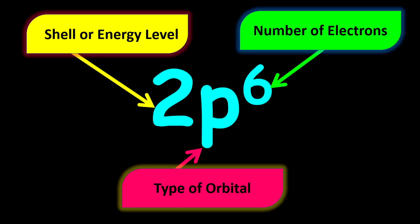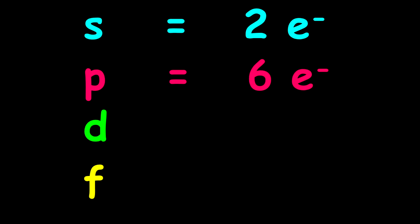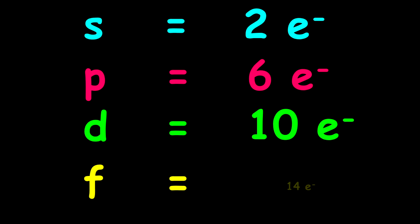The next concept is the number of electrons that can be on each type of orbital. Remember that the S orbital can hold up to a maximum of 2 electrons, while the P type of orbital can hold a maximum of 6 electrons, and the D orbital holds a maximum of 10 electrons. You should notice the pattern — they increase by 4. So after D comes F, which holds 14 electrons.